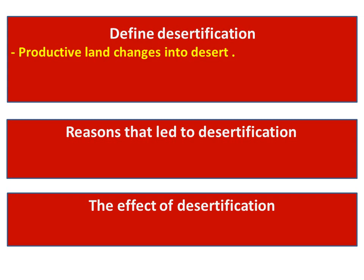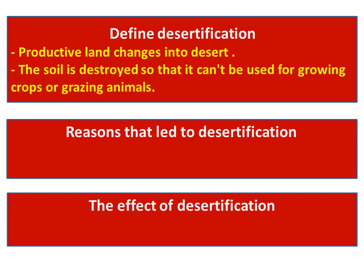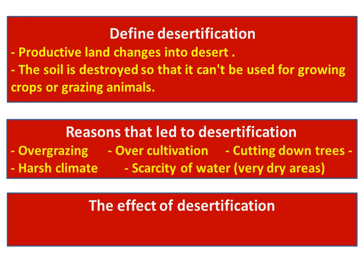Definition of desertification: productive land changes into desert — the soil is destroyed so that it cannot be used for growing crops or grazing animals. Reasons include overgrazing, over-cultivation, cutting down trees, harsh climate, scarcity of water, and very dry areas.